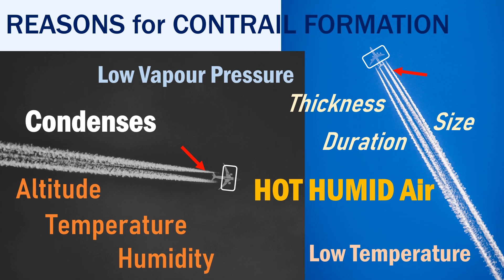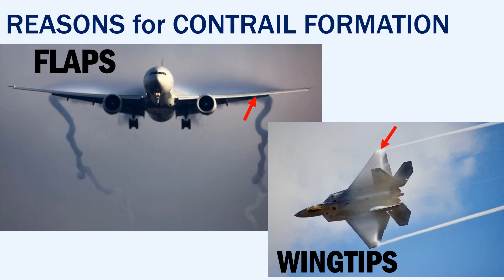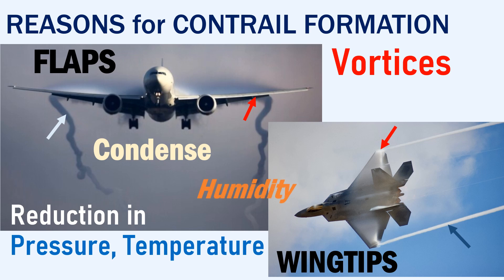These contrails are usually seen on aircraft flying at very high altitudes. Some contrails may be seen on aircraft flying at lower altitudes, mostly formed at the trailing edge of the flaps or the wing tips and not necessarily at the engine exhaust. At the trailing edge of the flaps and wing tips, vortices are created behind the aircraft. These vortices cause a reduction in pressure and temperature, which can cause the water in the air to condense, resulting in a visible contrail. These contrails also depend on humidity but will usually occur at lower altitudes when the aircraft is flying at slow speeds.